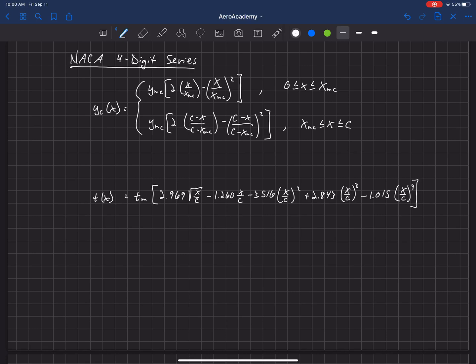So the camber line is a function of a couple things here. We've got xmc, which is the location of maximum camber. Now remember that our camber line is going to look something like this. We've got the leading edge and trailing edge, and this is our chord C. And so the location of maximum camber in what I've drawn here would be that x value right there. So that would be xmc.